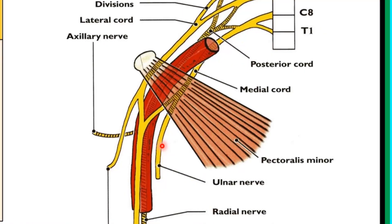The ulnar nerve is the deepest branch of the medial cord of the brachial plexus. In the axilla, it lies medial to the third part of the axillary artery. Pectoralis minor divides the axillary artery into three parts, and the ulnar nerve is seen arising at the third part, lying medial to the axillary artery. At this point it lies between the axillary artery laterally and the axillary vein medially.